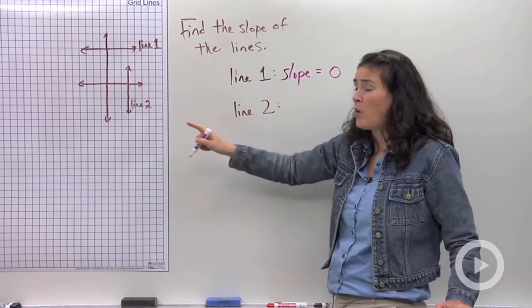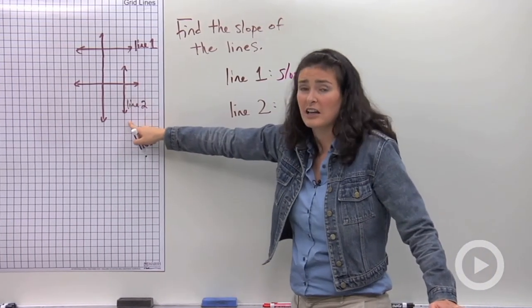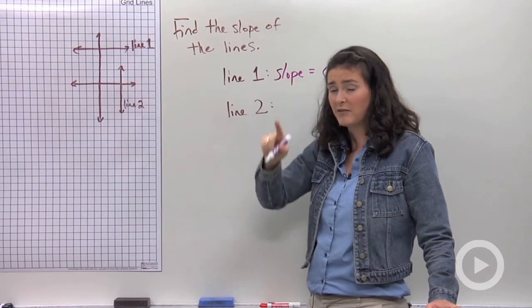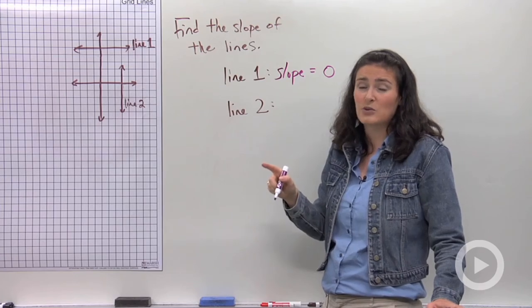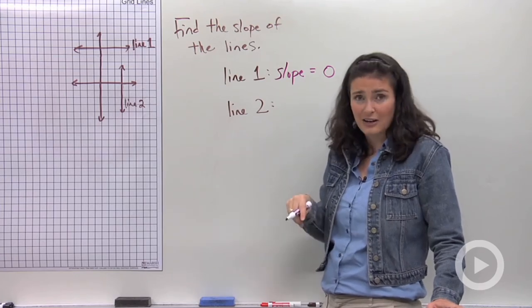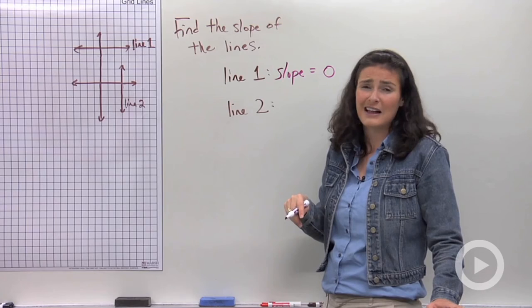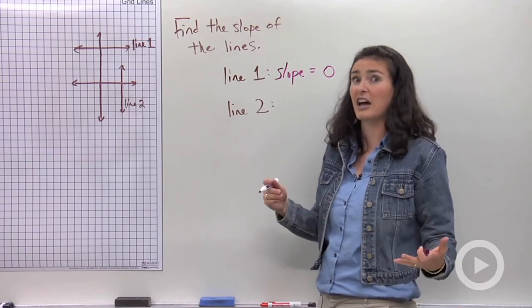Now, don't get that confused with what we'll see next. This is a vertical line. Vertical lines do have a vertical change, but they don't have a horizontal change. What that means is you have zero in the denominator of your slope ratio, and that's not allowed in math. It's what's called undefined.